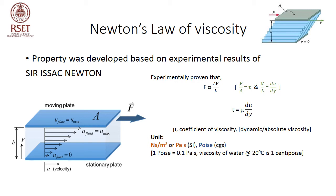This mu value is called the coefficient of viscosity, also known as dynamic viscosity or absolute viscosity. The SI unit of dynamic viscosity is Newton-second per meter square, or Pascal-second. In the CGS system it is called poise, and one poise equals 0.1 Pascal-second. The viscosity of water at 20°C is 1 centipoise.